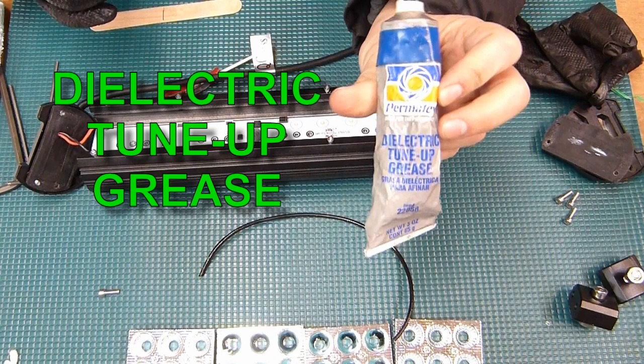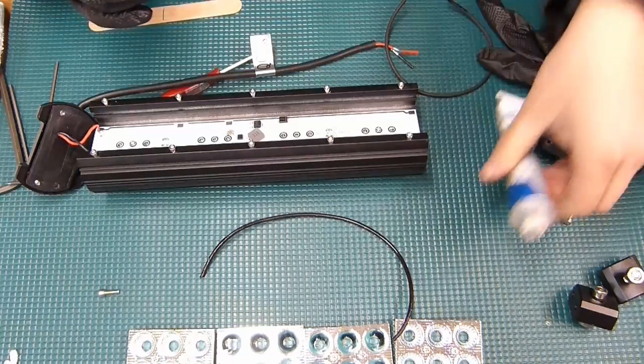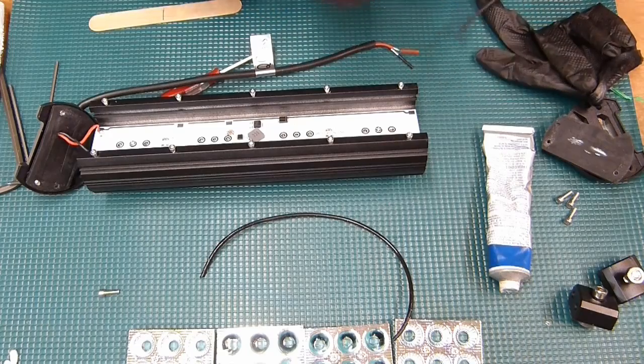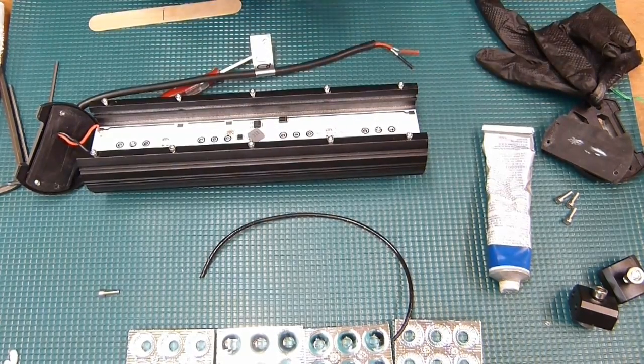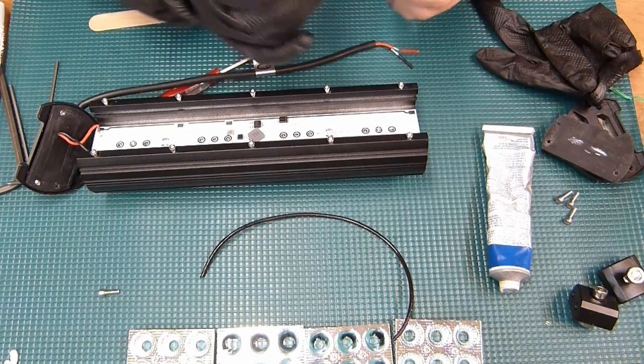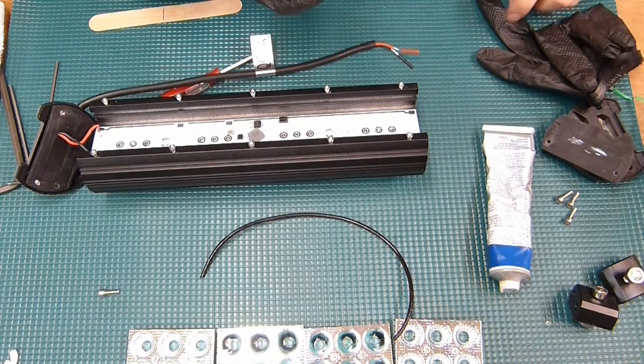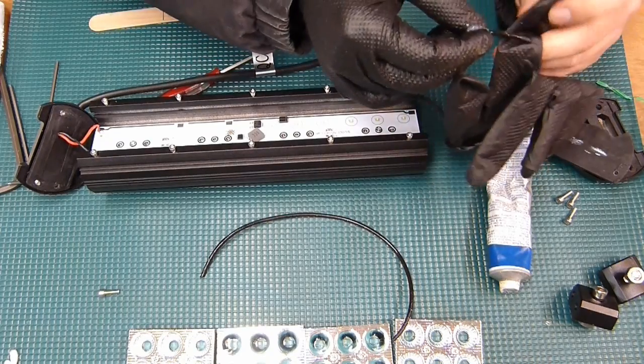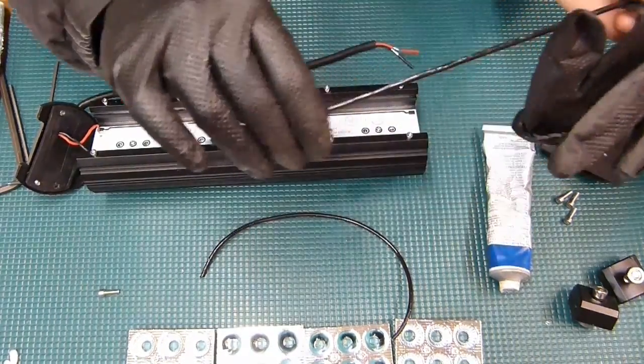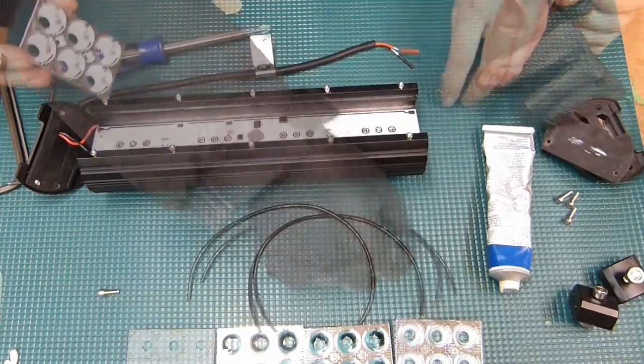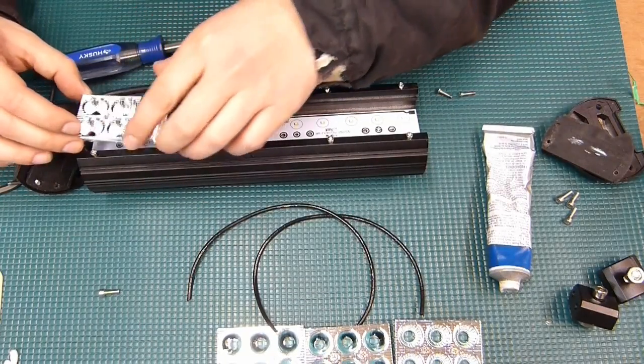Here's some dielectric tune-up grease. This is high silicone content grease, very compatible with most gasketing materials. You don't want to use petroleum grease. This could probably handle petroleum grease just fine because it's so resistant, but we don't have to do that because I've got a huge tube of this grease.